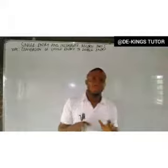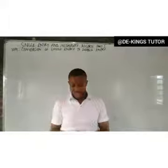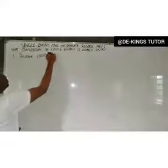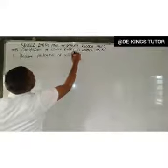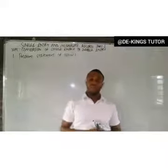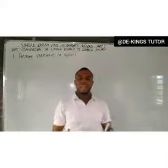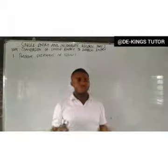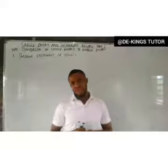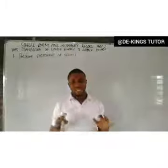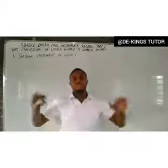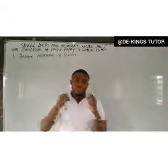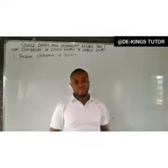We have various steps to convert single entry towards double entry. The first step is the preparation of the statement of affairs. The statement of affairs is a summarized balance sheet — it shows in tabular form the accounting equation comprising assets, liabilities, and capital. The statement of affairs is prepared to obtain the capital that will be used for the balance sheet.